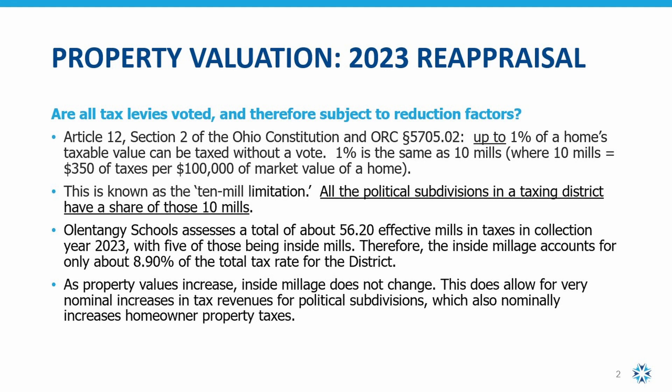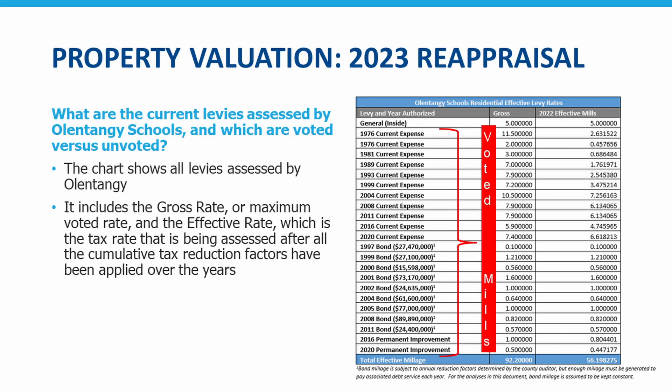Olentangy Schools has issued a total of 56.2 effective mills that are assessed in the district. Of those 56.2 mills, Olentangy has been allotted five inside mills that do not change. Therefore, as home values increase, those five mills — which are approximately 8.9 percent of the district's total tax rate — are locked in to allow for growth. On the chart, you can see our voted and unvoted millage. The unvoted five mills, or inside mills, at the very top of the chart, do not change. All other millage is voted and subject to change.